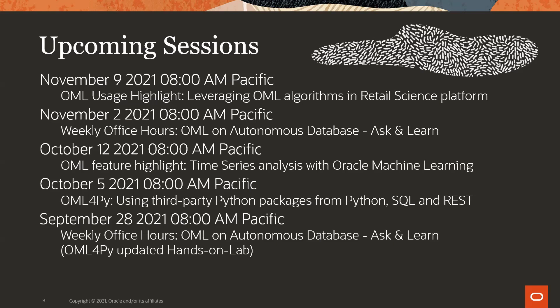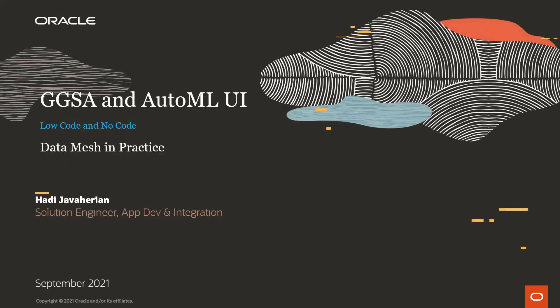For next week we're planning on an OML for Python updated hands-on lab. We're still working on the details — that might slip, and if it does we'll probably see it in October. For October 5th: using third-party Python packages from Python, SQL, and REST. Then October 12th: time series analysis. November 2nd: a weekly session. November 9th: leveraging OML algorithms in a retail science platform. Without further ado, I'll give it up to Hadi.